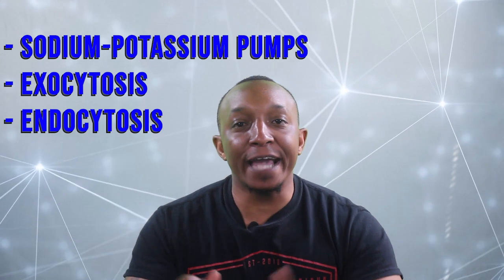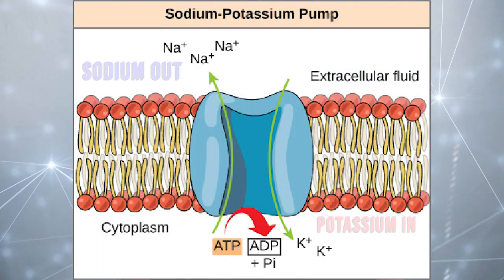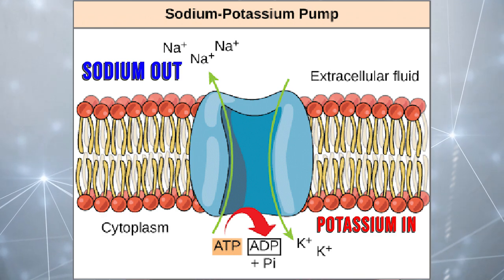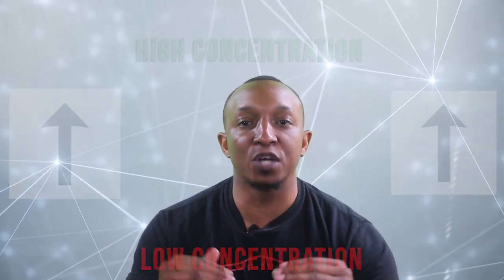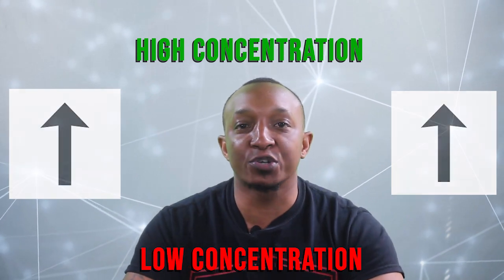Types of active transport include sodium potassium pumps, exocytosis and endocytosis. Sodium potassium pumps work by moving sodium ions out of the cell and potassium ions into the cell. It achieves this by using ATP to move the sodium and potassium from areas of low concentration to areas of high concentration against their concentration gradient.